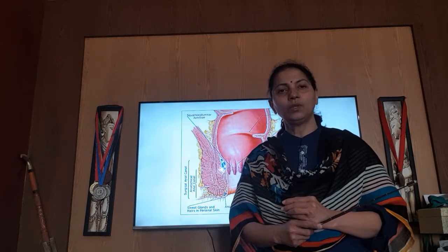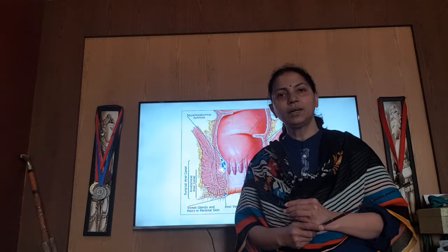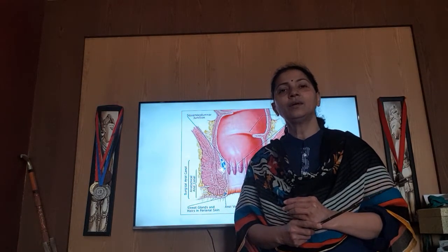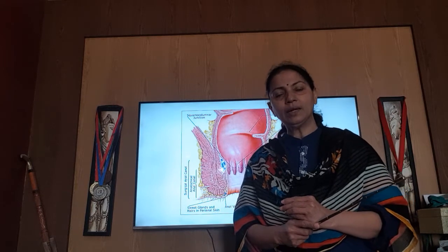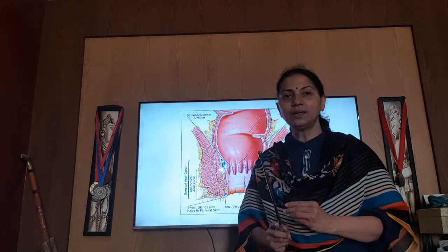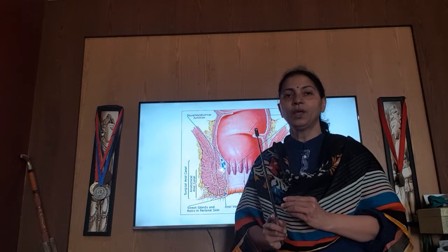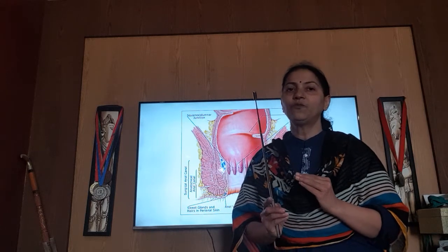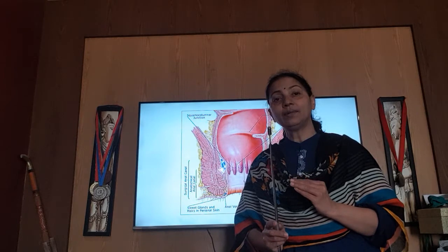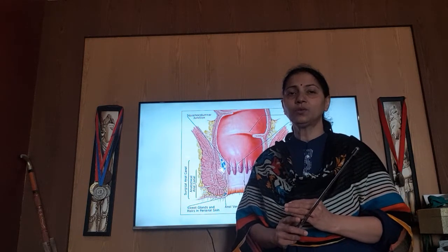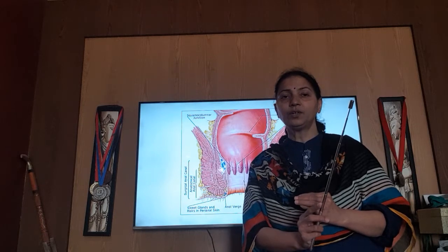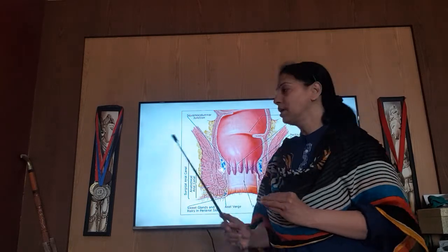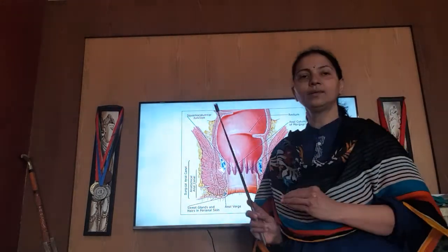The gut is divided into foregut, midgut, and hindgut. The foregut ends at the major duodenal papilla, where the midgut starts. The midgut ends at the junction of the right two-thirds and left one-third of the transverse colon, where the hindgut begins. So the hindgut comprises the left one-third of transverse colon, descending colon, sigmoid colon, rectum, and anal canal.